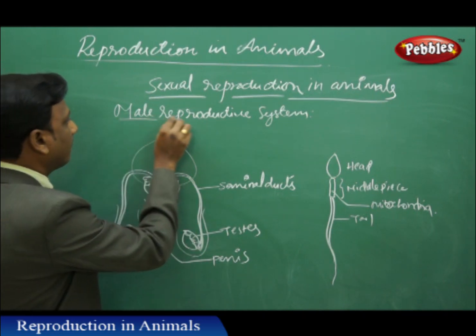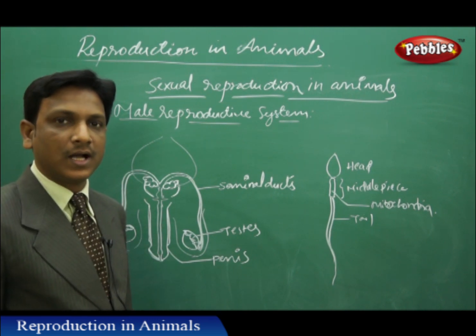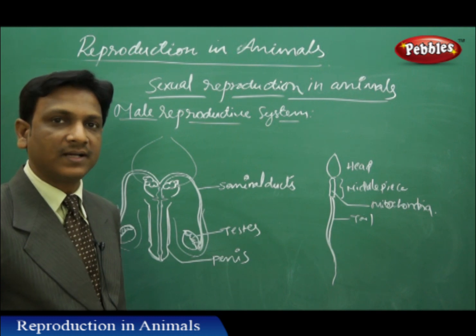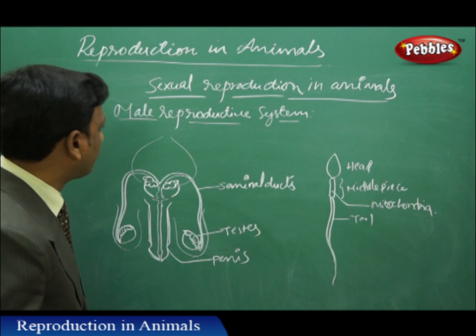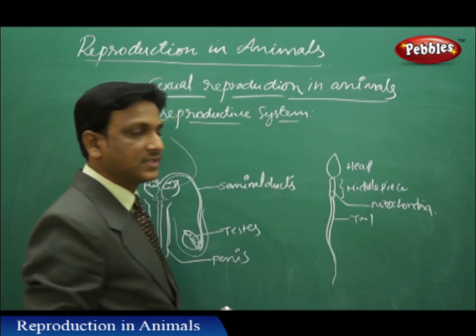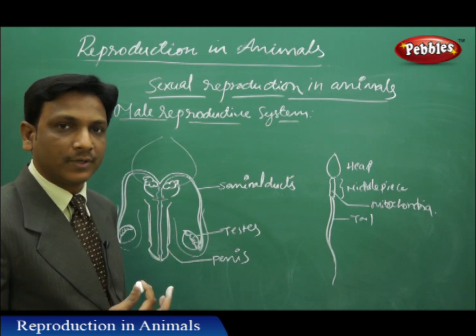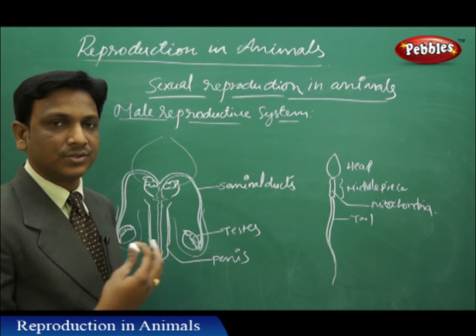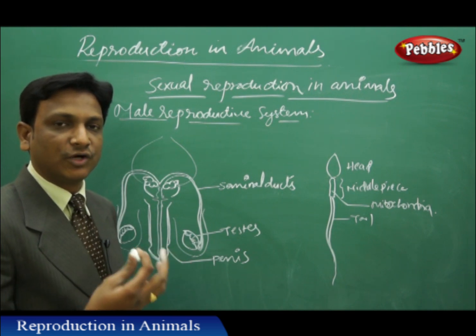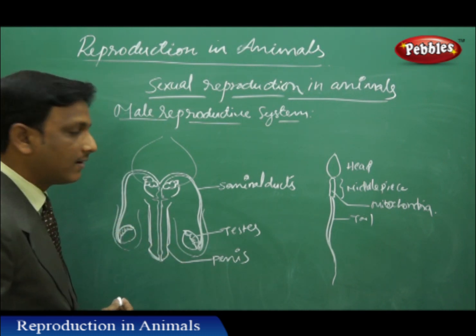First, let us look at the male reproductive system. We might see a cow giving birth - the mother gives birth to the calf, but the calf is developed inside the mother's womb. For that development, the male reproductive system and male reproductive cells are important. The male gametes fuse with the female gametes, and in the body of the female the development of the baby takes place.